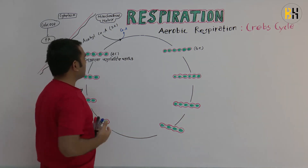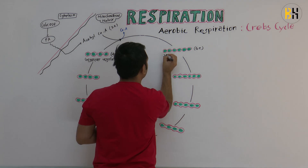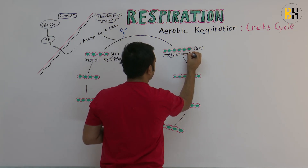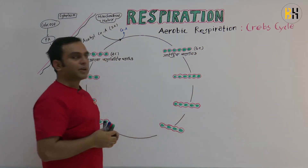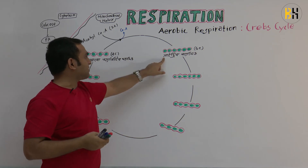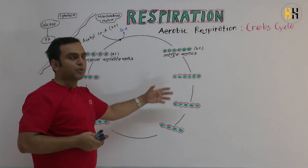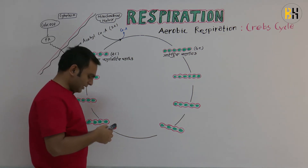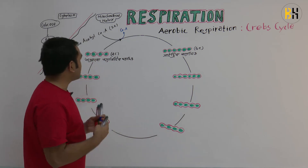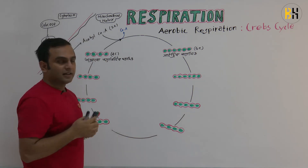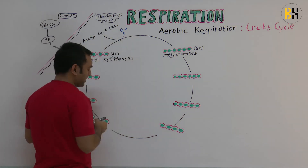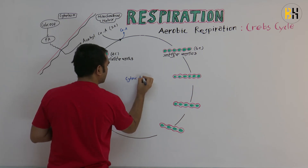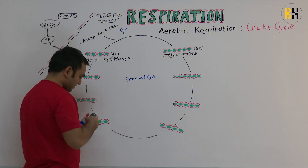Acetyl CoA plus oxaloacetic acid gives citric acid. So acetyl CoA plus oxaloacetic acid produces citric acid. This is the citric acid cycle, also called the Krebs cycle.